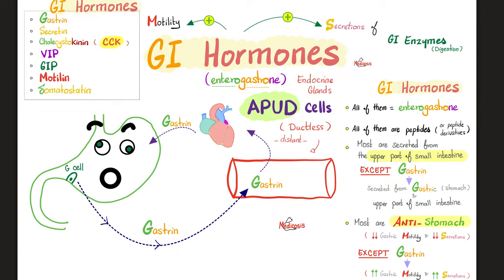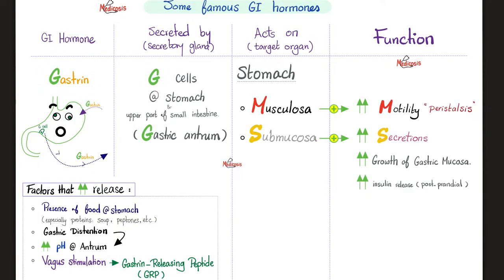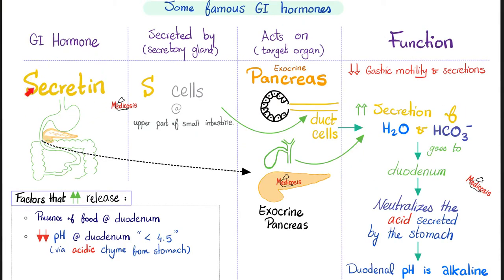Gastrin is the only one that is pro-stomach. It boosts gastric motility and secretions, especially after you eat. With enough cortical training — hashtag conditioning — gastrin will be released from the stomach just by smelling the food, or just by hearing Gordon Ramsay on television. The next GI hormone is secretin, the hero of secretions. Secretions of what? Tons of water and bicarbonate from the duct cells of the exocrine pancreas and from the biliary ducts as well.